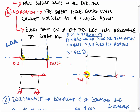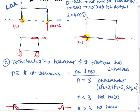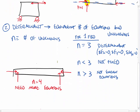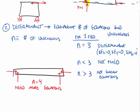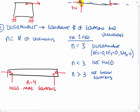Now let's look at determinacy. Determinacy is looking at whether the number of equations equals the number of unknowns. If we call N the number of unknowns, three unknowns is the ideal number for a two-dimensional free body diagram because we have three equations available: sum of forces in X, sum of forces in Y, and sum of moments. Three equations maximum to solve the problem.